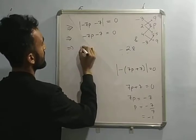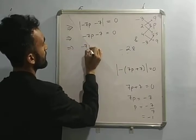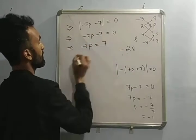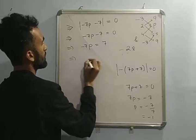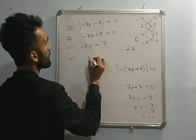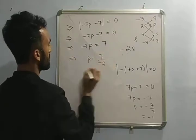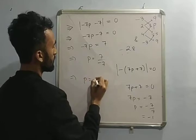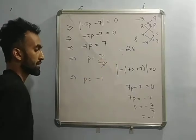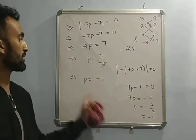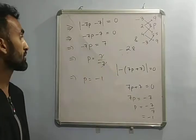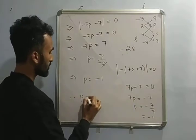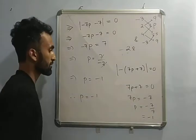Alternatively, minus 7P equals to minus 7 goes this side, it becomes 7. Which implies P equals to 7 by minus 7, which implies P equals to minus 1. Same answer. Therefore, P equals to minus 1.